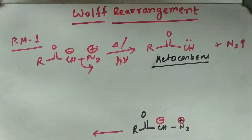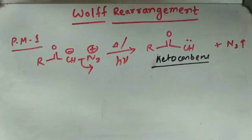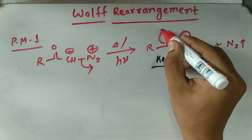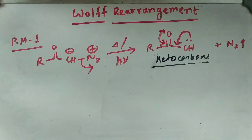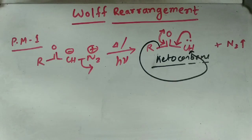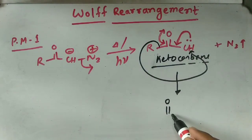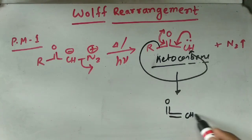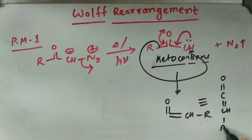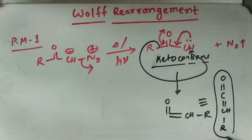In the second step of Possible Mechanism 1, the keto carbene rearranges. The electrons go toward the oxygen, which comes back, and the R group migrates to the carbene carbon atom. The product we get is R-CH double bond C double bond O — drawn symmetrically as O=C=CHR — which is a ketene.